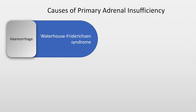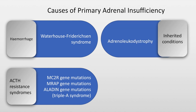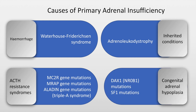Hemorrhage into the adrenal glands can occur because of Waterhouse-Friderichsen syndrome as seen in meningococcemia. There could be ACTH resistance syndromes due to gene mutations, inherited conditions like adrenal leukodystrophy, and congenital adrenal hypoplasia due to DAX1 mutations.